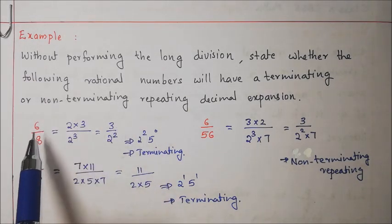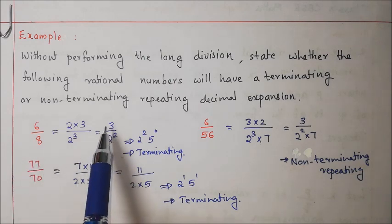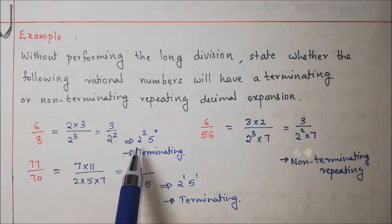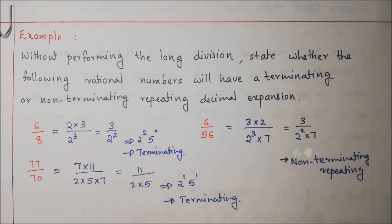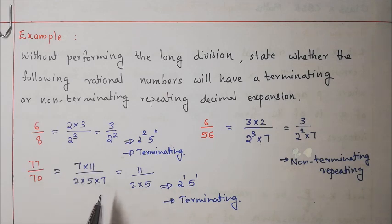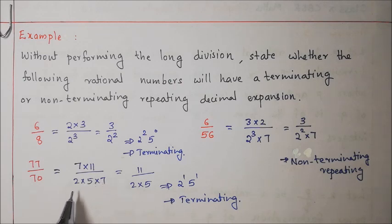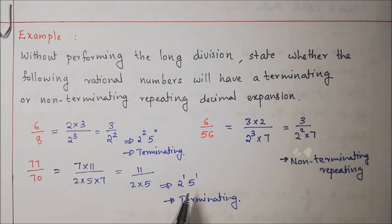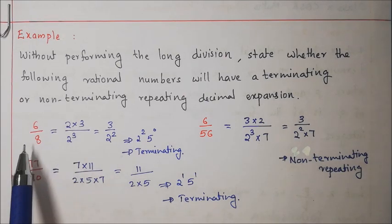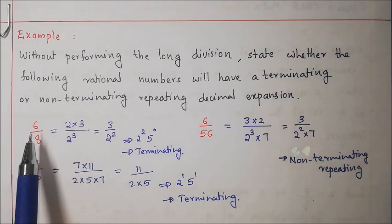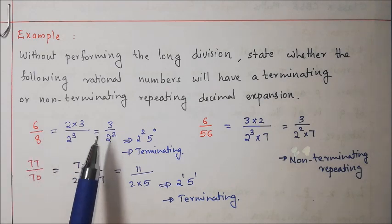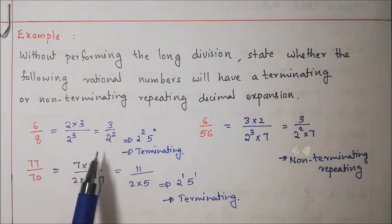Please note: in such questions, first make sure that numerator and denominator are co-prime, and then check the factors of q. Otherwise we may end up with wrong conclusions. For example, in the last question, if we proceed without cancelling common factors, we see a 7 in the denominator and might incorrectly conclude that q is not in the form of 2 to the power n into 5 to the power m. So always cancel common factors first.